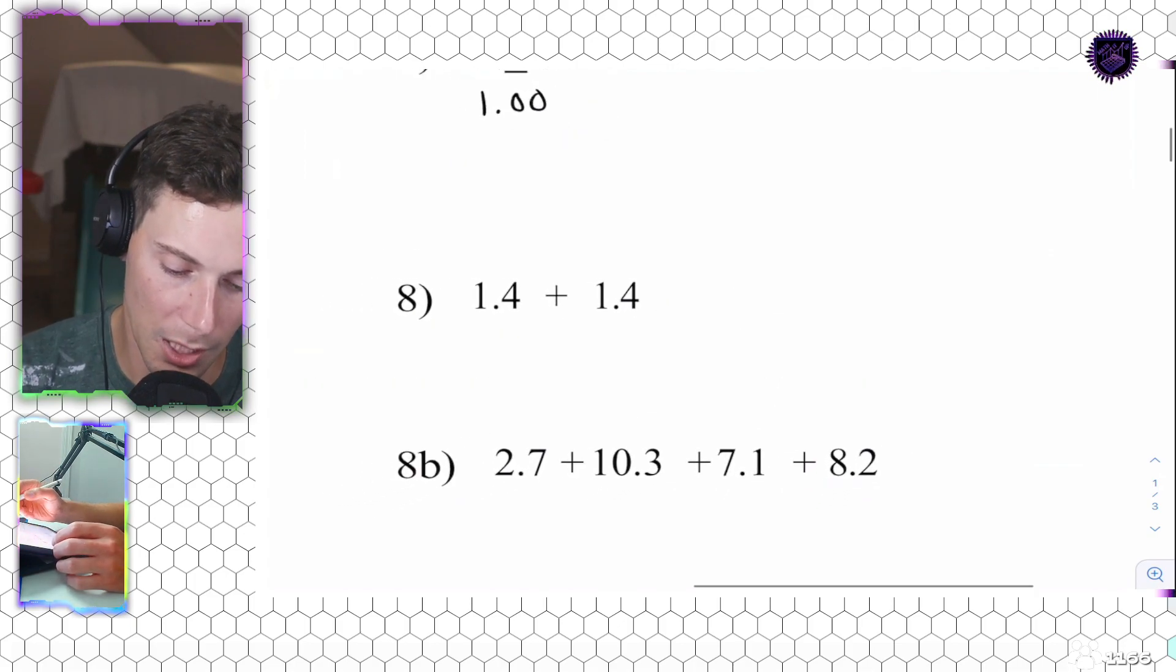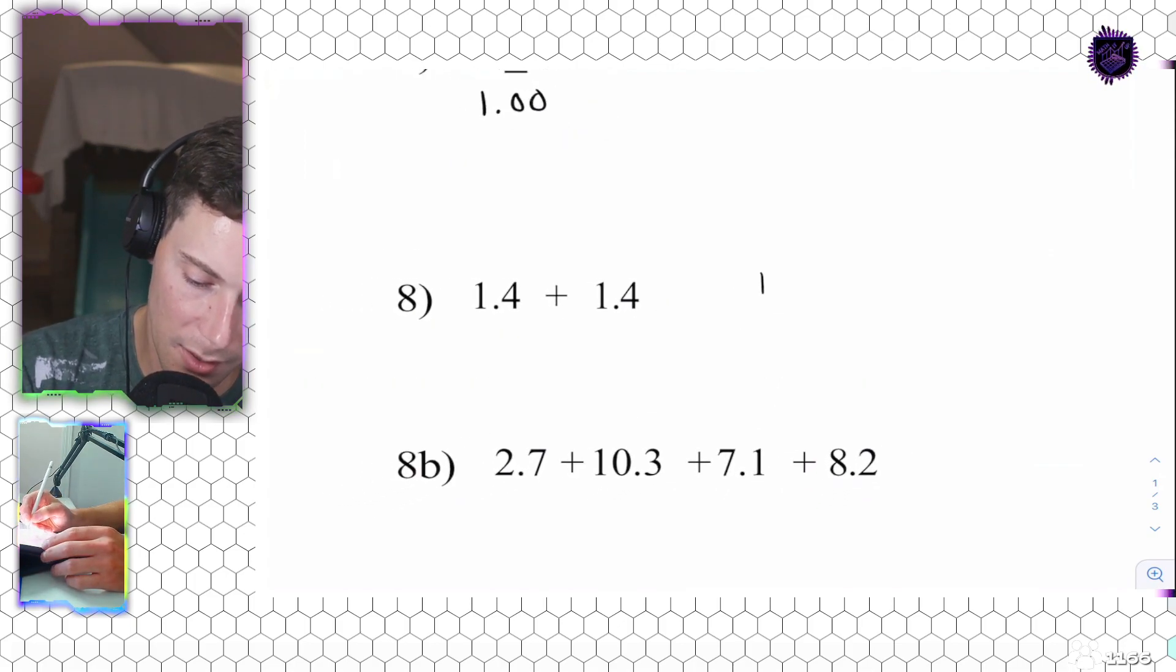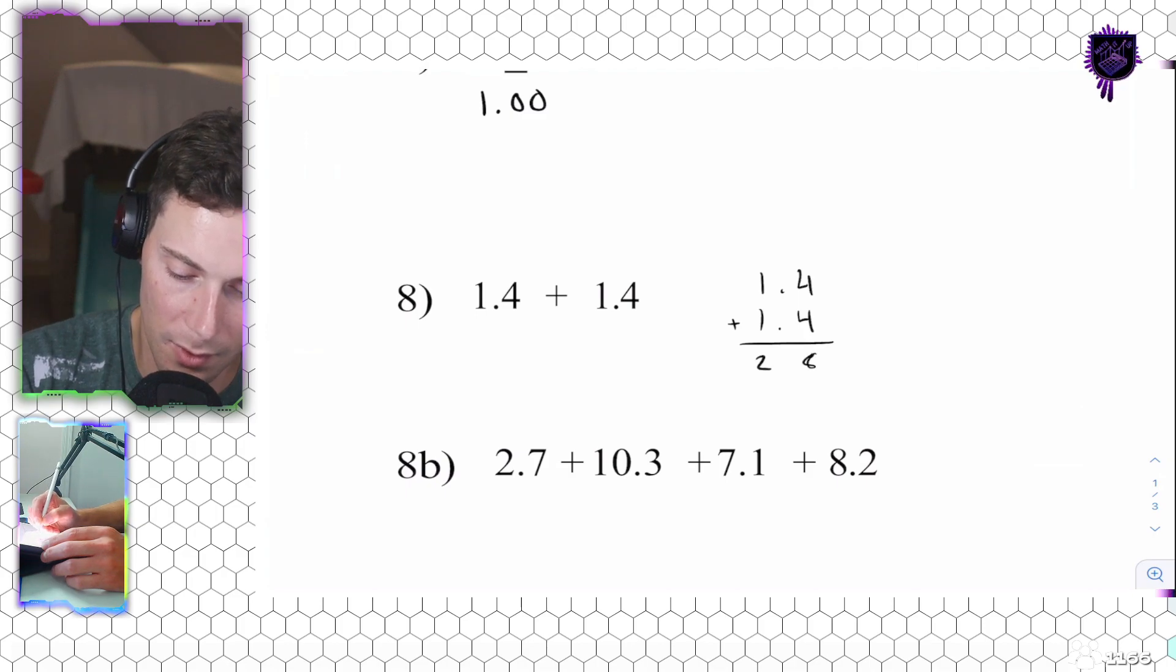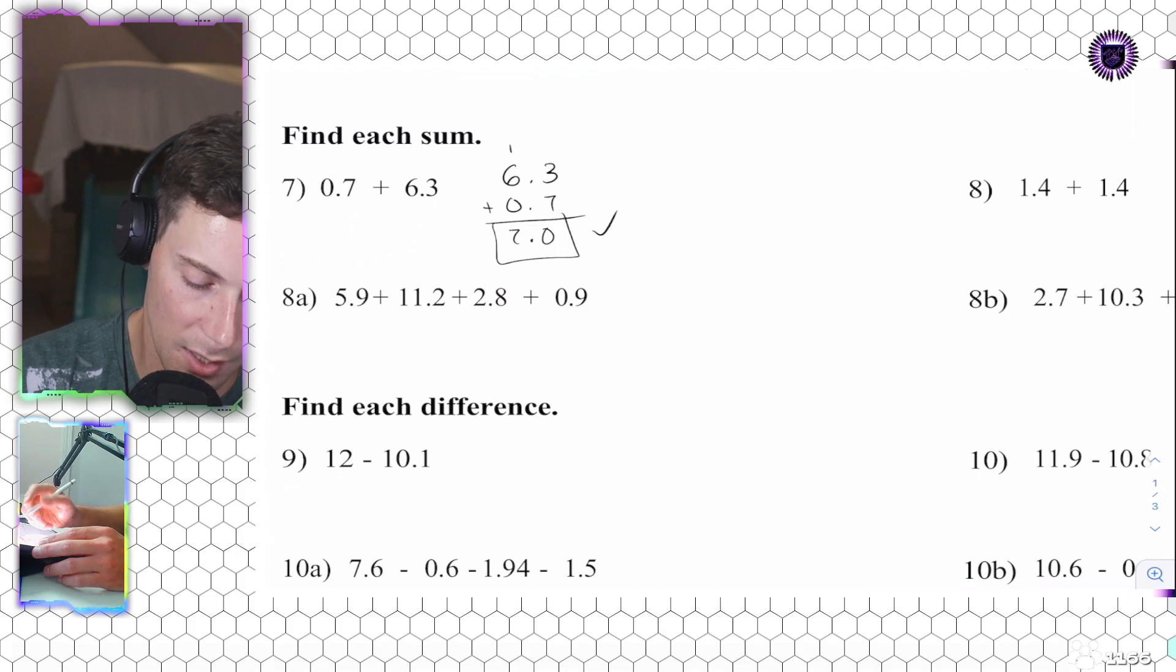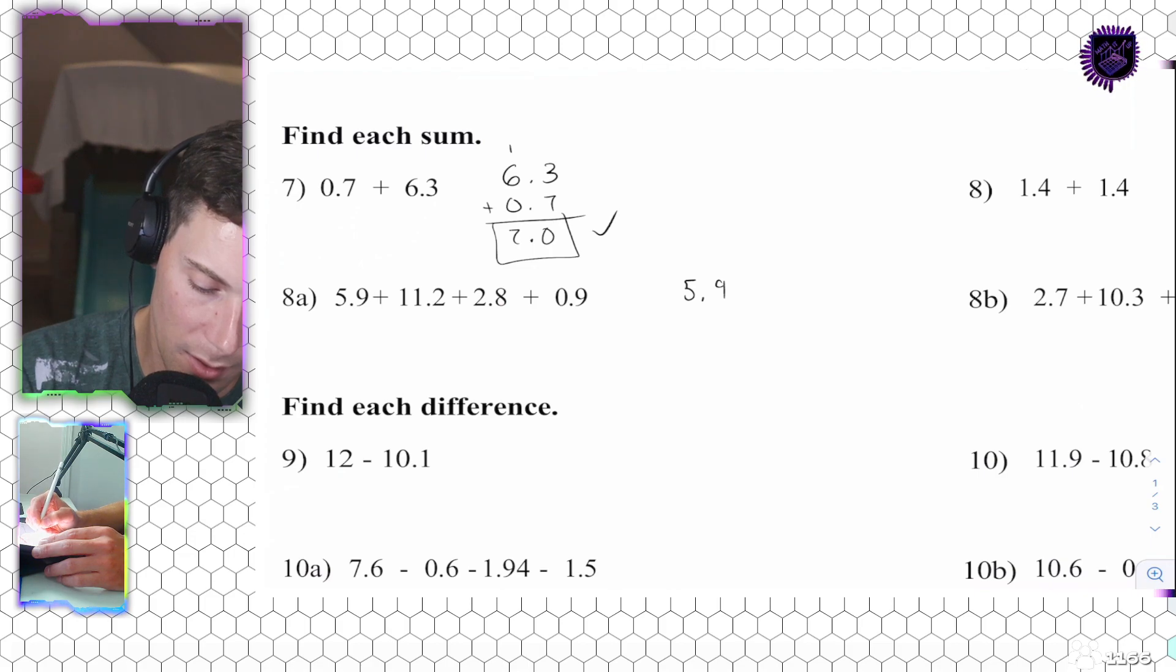1.4 plus 1.4. So, let's, again, write this vertically. And, we want to line up our decimals. 2.8. Not too shabby. Oh, now it's getting a little bit longer. I'm going to take this one off to the side. 5.9. 11.2. 2.8. 0.9.